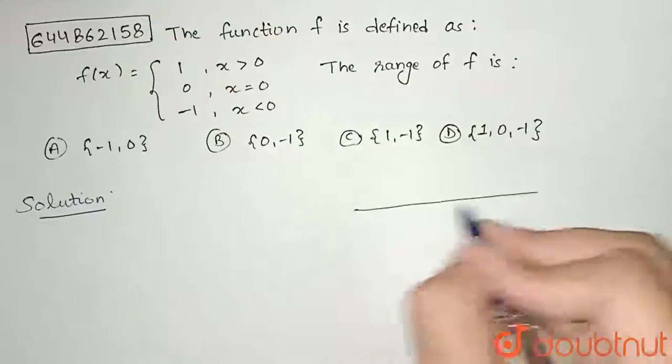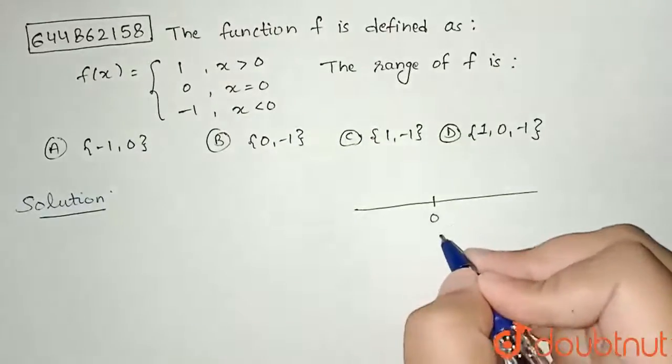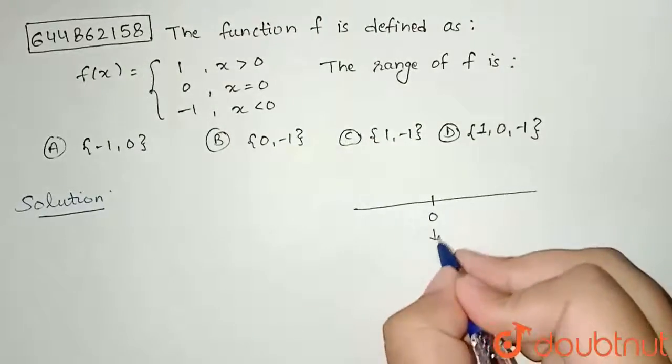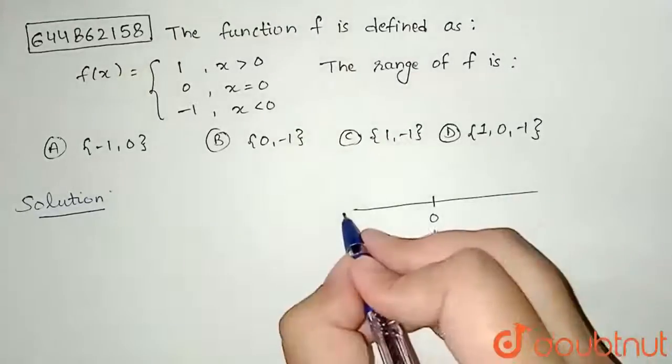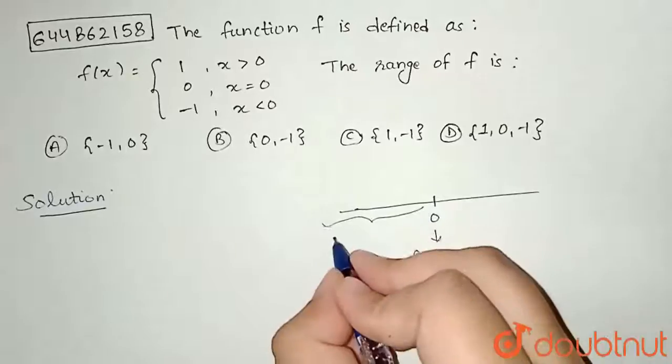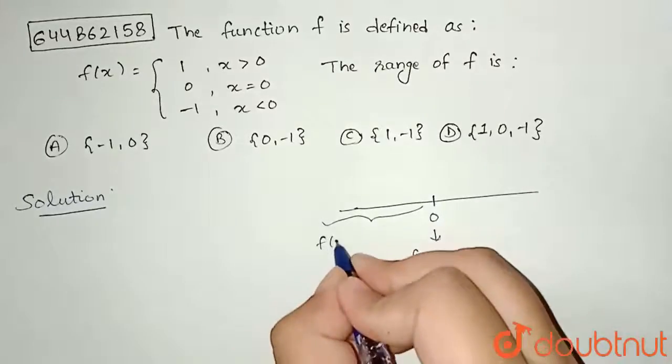So, if we consider a number line, so this is my 0. And I am given here that the value of f of 0 equal to 0 and in this region, we are given that the value of f of x,